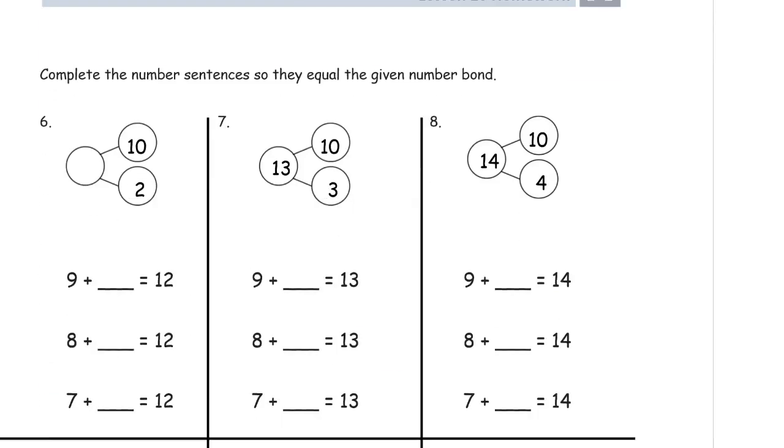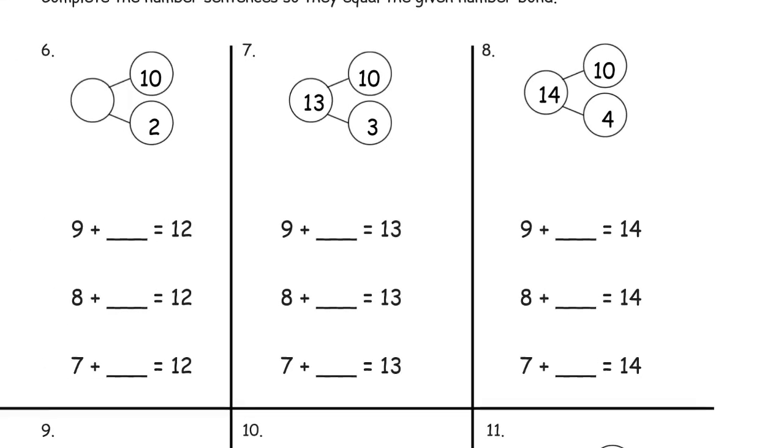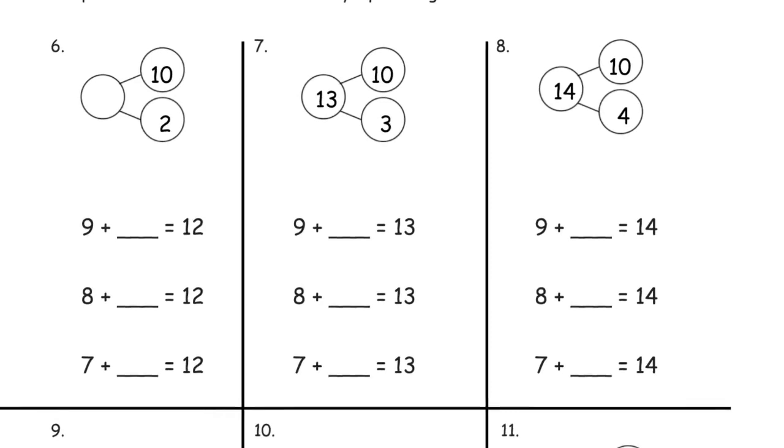Our second page, we're completing number sentences so they equal the number bond that we see. So for number 6 here, 10, 2, that's a 12.